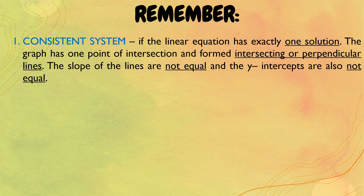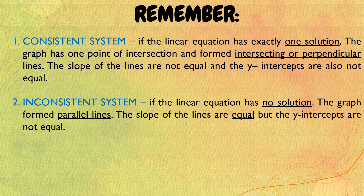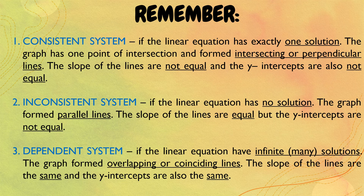Let us now summarize what we have learned. First, the consistent system: the linear equation has exactly one solution, the graph has one point of intersection and forms intersecting or perpendicular lines, the slopes are not equal, and the y-intercepts are also not equal. The inconsistent system: the linear equation has no solution, the graph forms parallel lines, the slopes are equal but the y-intercepts are not equal. The dependent system: the linear equation has infinite or many solutions, the graph forms overlapping or coinciding lines, the slopes are the same, and the y-intercepts are also the same.